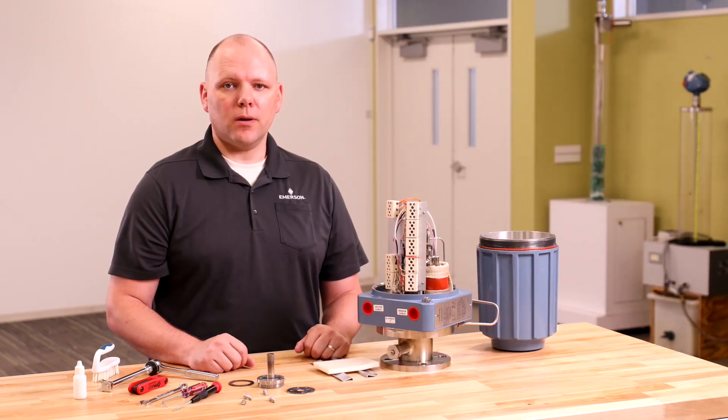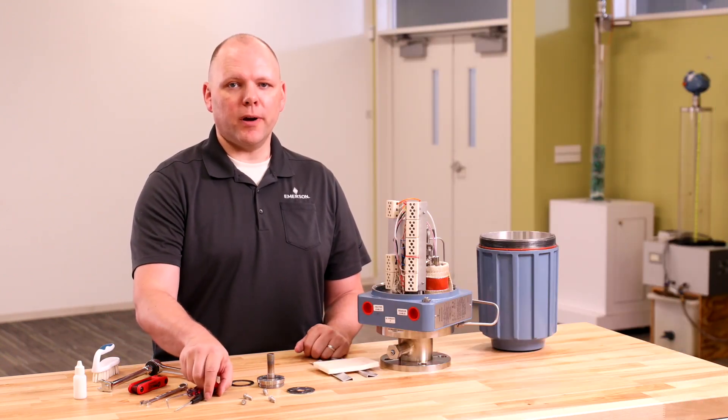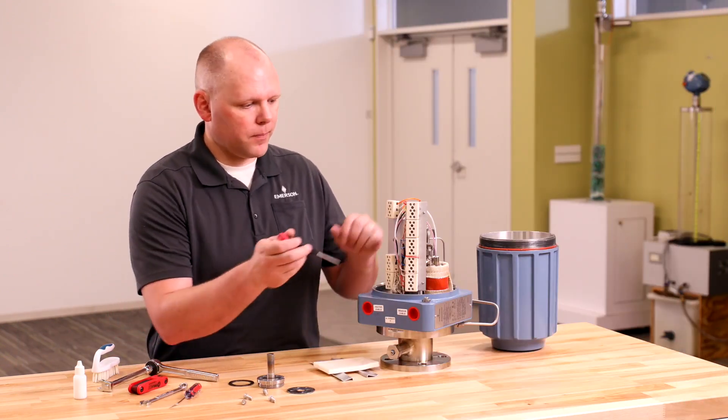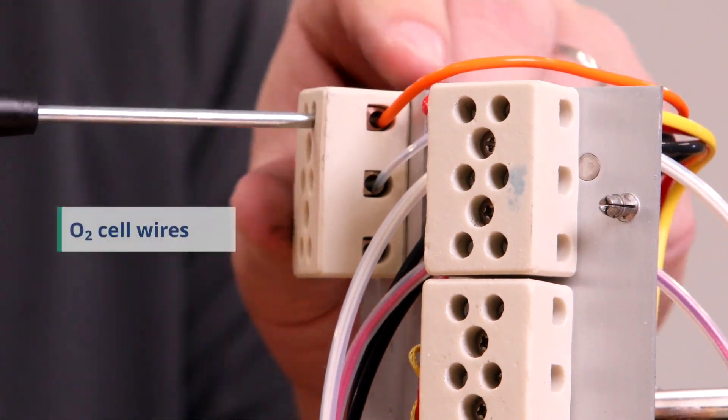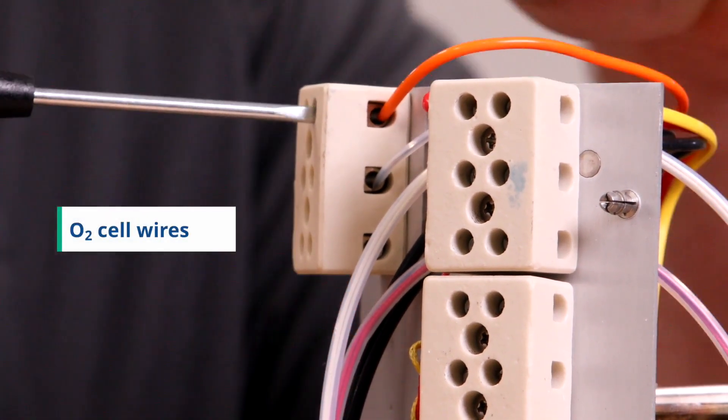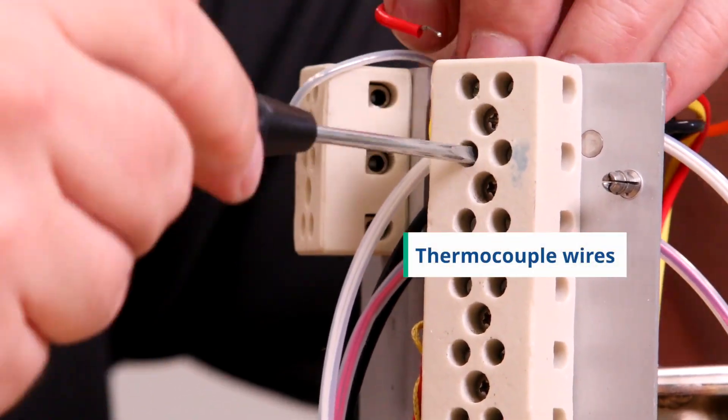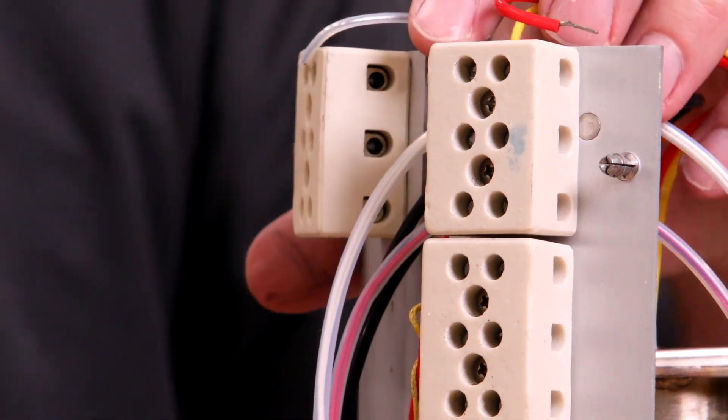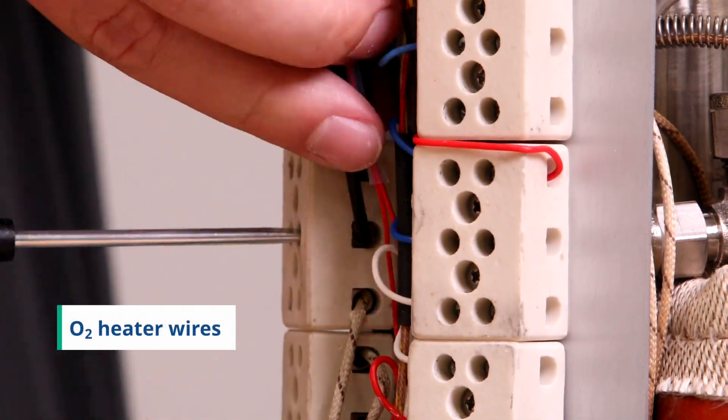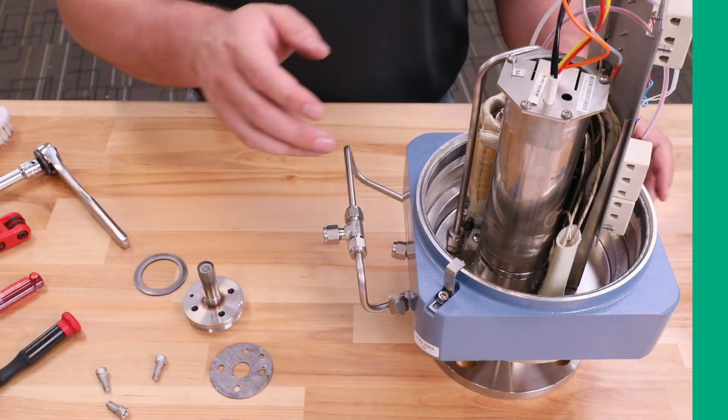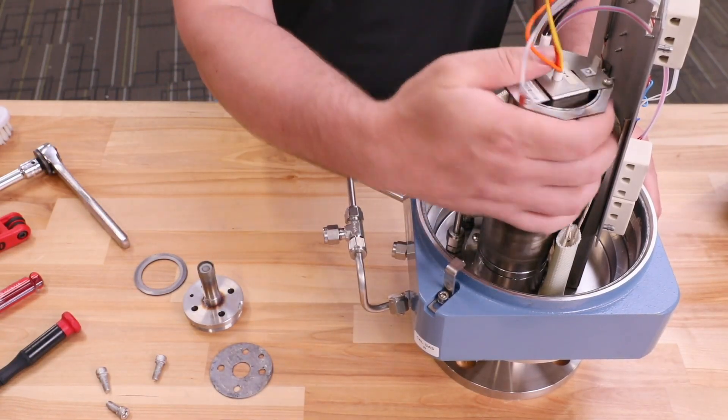Disconnect the O2 heater wires, O2 cell wires, and thermocouple wires from the terminal block. Now you can unscrew and remove the O2 assembly from the sensor housing.